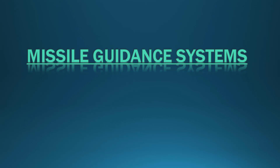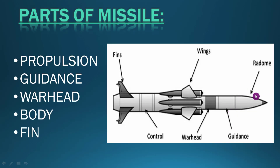First of all, let's see the different parts of a missile. The forward part contains the fuse sensor that detonates the warhead. Then there is the guidance part, the warhead part, and then there are fins that give aerodynamic control over the flight direction. The propulsion system is at the rear.